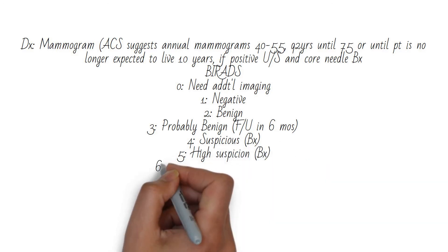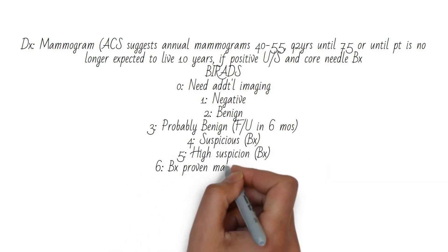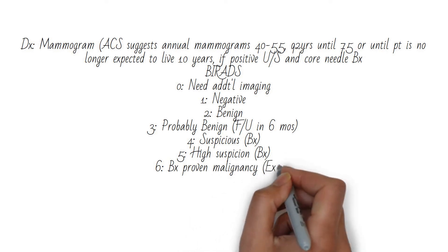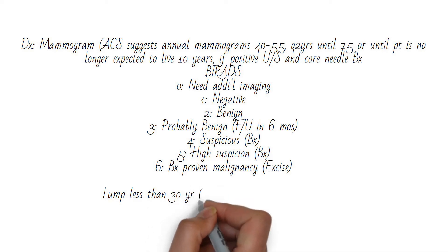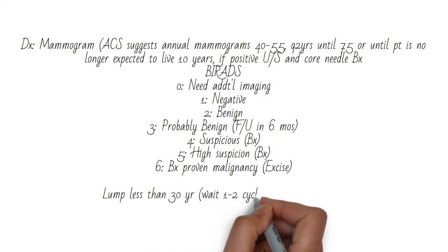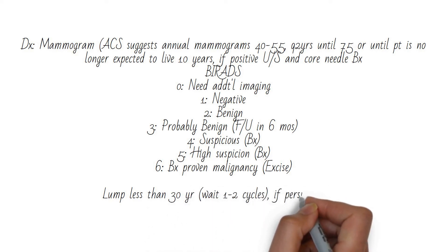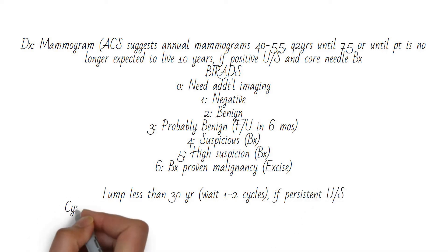A lump in a patient less than 30 years old requires a more complicated diagnosis. First, wait 1 to 2 menstrual cycles, and if the lump persists, get an ultrasound because breast tissue is dense in younger women and mammogram is somewhat less reliable.